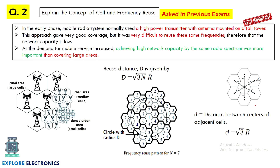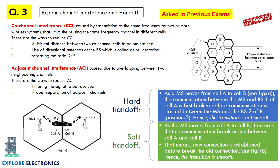The next question concerns wireless communication: the concept of cell and frequency reuse. As you know, this is one cell, and we can reuse the frequency with the adjacent cell if it is having a distance of D. This needs to be explained with two expressions and a little bit of explanation related to what is a cell, what is a cluster, and what is frequency reuse, with these figures.